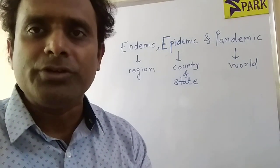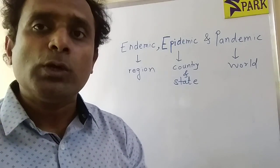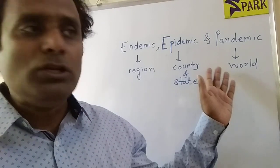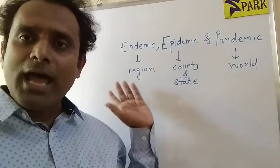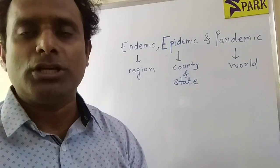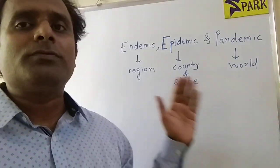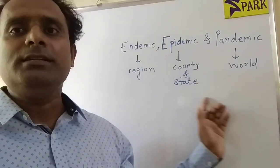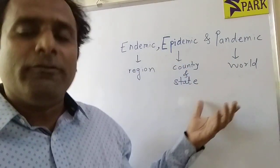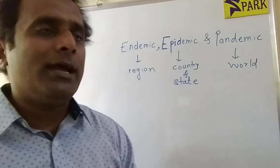Epidemic is a disease that spreads quickly in a particular country or state, and it affects a fairly large number of people — not as many as all over the world, and not as small as in a particular region, but a fairly large number of people. If you observe, the number of people affected by these diseases goes on increasing: endemic affects a small number of people, epidemic affects a fairly large number, and pandemic affects people all over the world.